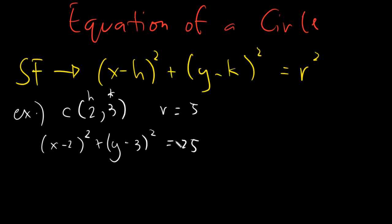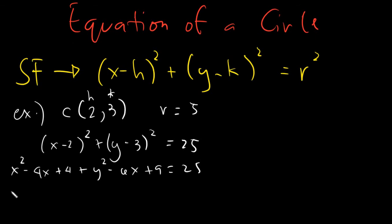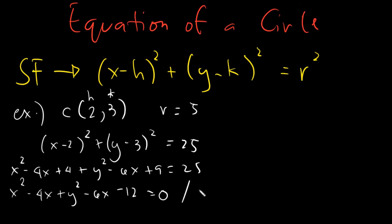Then just simply apply square of binomial and combine all the similar terms. The answer here would be x squared minus 4x plus 4 plus y squared minus 6x plus 9 is equal to 25. Combine all the numbers, so we will have x squared minus 4x plus y squared minus 6x. This is 25 minus 9 minus 4, which gives us negative 12 equals to 0.